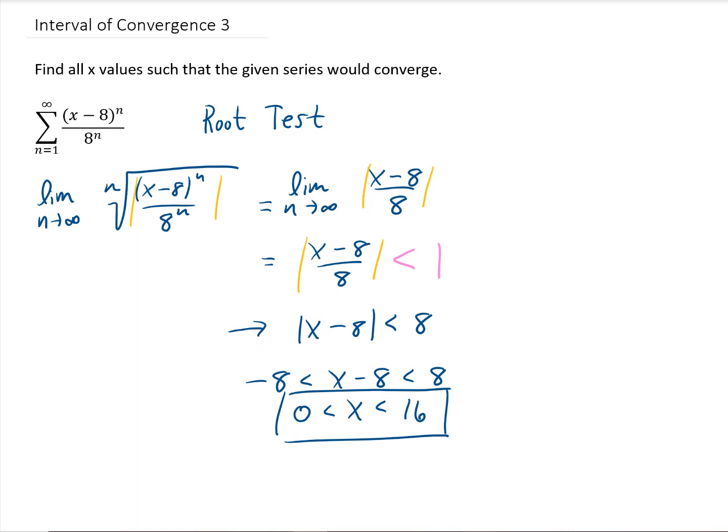But with all these interval of convergence problems, we need to test the endpoints to see if we get a convergent series in this example when x equals 0 and when x equals 16. The reason we need to do this is because x equals 0 and x equals 16 would correspond to this inequality up here equaling 1. And when this thing equals 1, the root test is actually inconclusive. So we're going to do the test by hand. Let's do it.